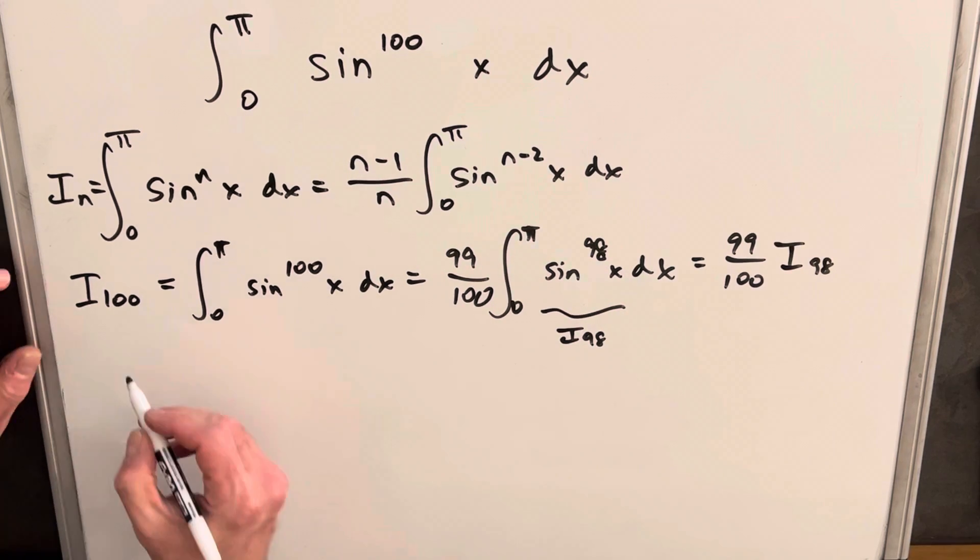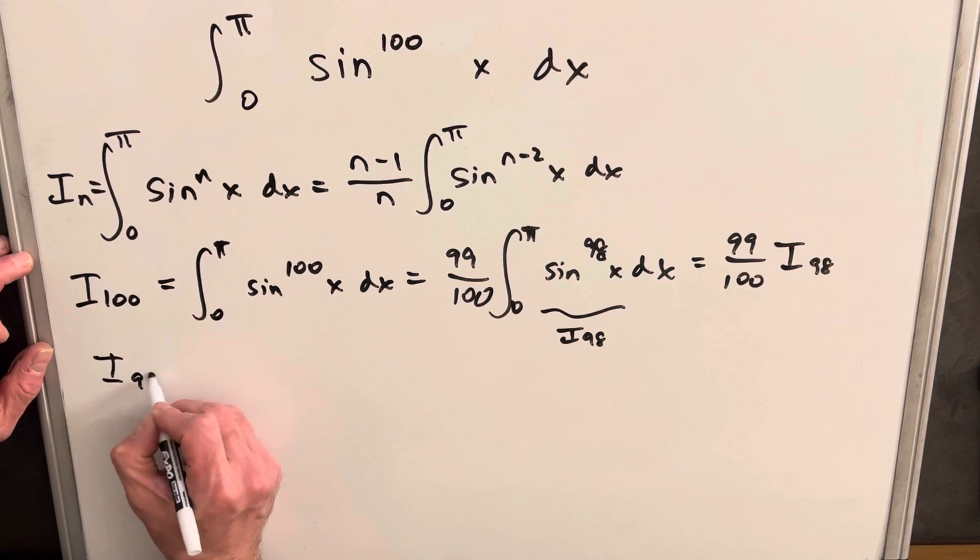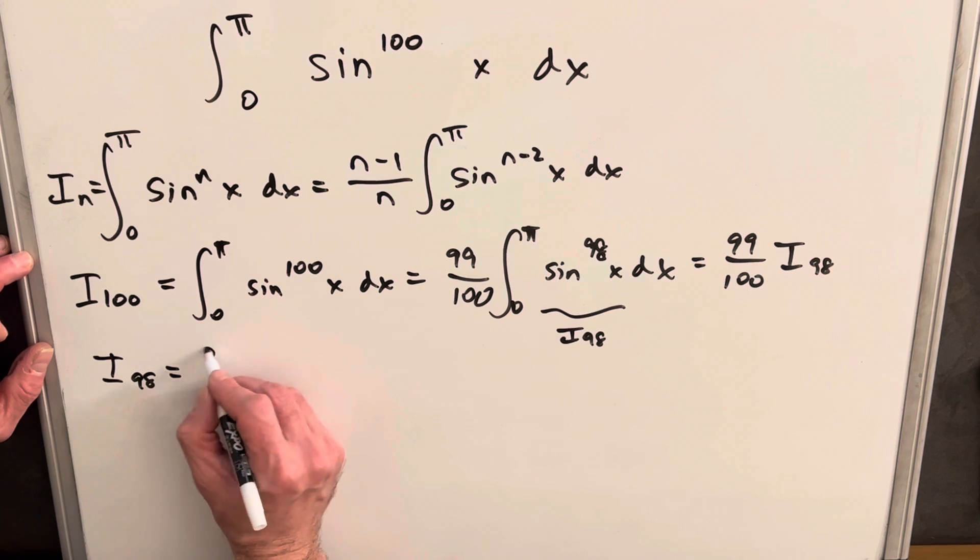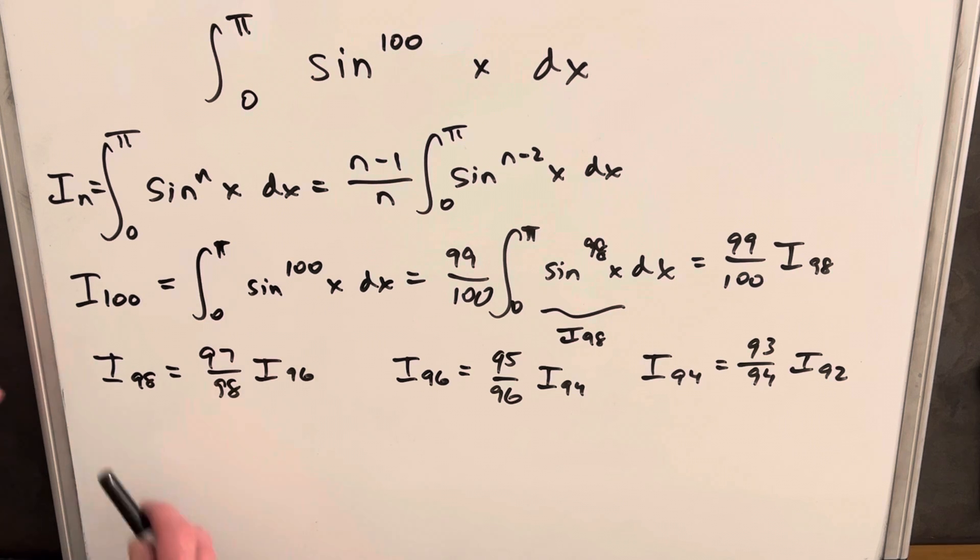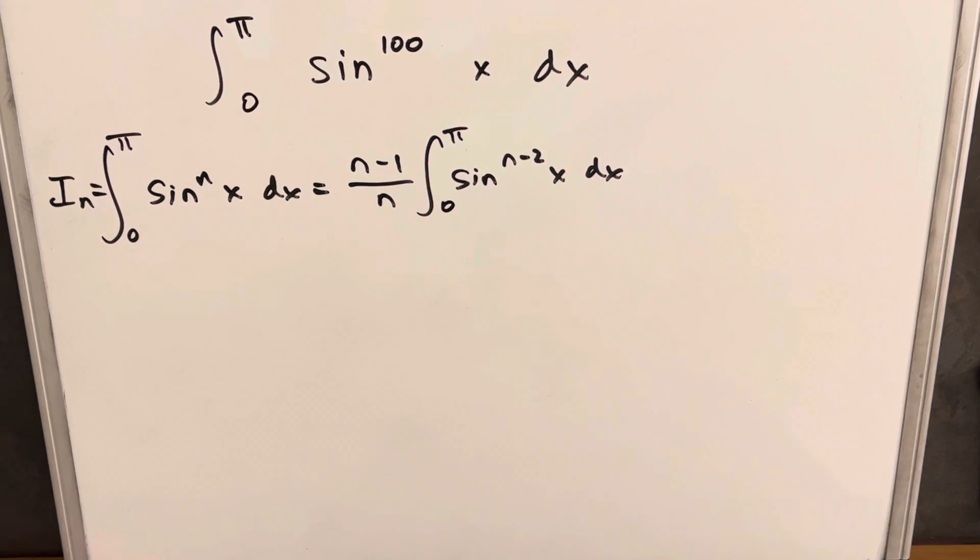Then we can repeat the same thing. What's i sub 98? That's going to be 97 over 98 times i sub 96. And we can just repeat this over and over again. You see 98, 96, 94. But if we were to keep going this way, it's going to take us all day. So let's see if we can find a better method. What I want to do next, instead of starting at 100, let's actually just start at 0.